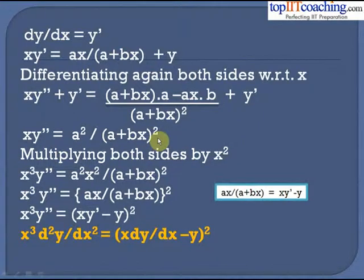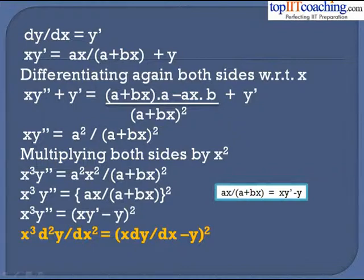Multiplying both sides by x²: x³·y'' = a²x²/(a+bx)² = [ax/(a+bx)]². Since ax/(a+bx) = x·y' − y (from the earlier equation), we get x³·y'' = (x·y' − y)², i.e., x³·d²y/dx² = (x·dy/dx − y)². This is the required identity, solved using concepts of higher order derivatives.